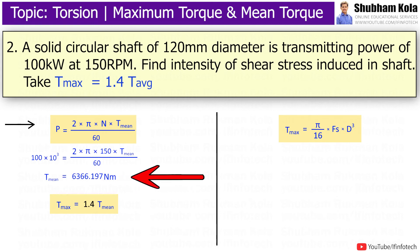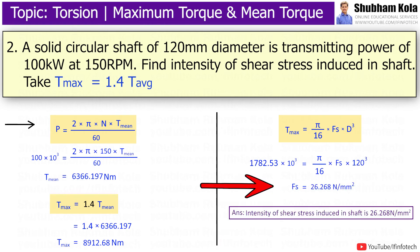Value of mean torque we got 6366.197 Nm. And the maximum torque T_max = 1.4T_average, i.e. T_min. Hence, the value of maximum torque we got 8912.68 Nm. So I will put all the values in formula. And calculated shear stress induced in shaft is 26.26 N/mm².